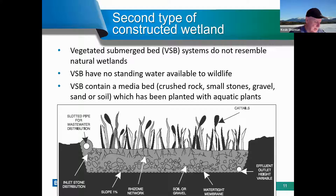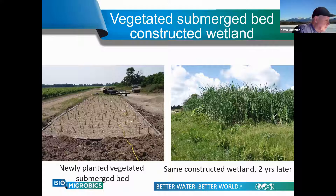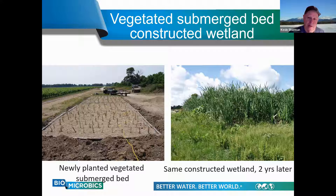This drawing highlights the difference between the two types of wetlands. In a submerged flow system, the wastewater is treated as it flows laterally through the porous media, with no free water surface. A vegetative submerged bed is shown here in the field in a before-and-after picture. Over two years' time, the vegetated submerged bed is full of lush vegetation, with significantly more evapotranspiration and plant growth occurring.